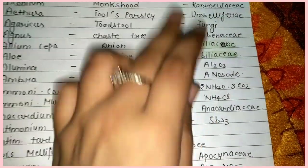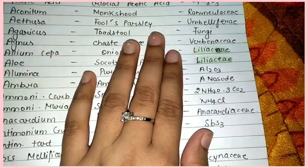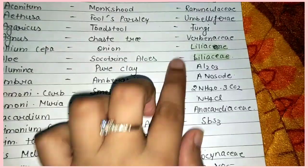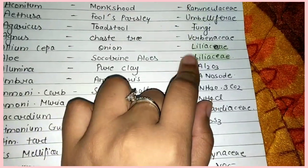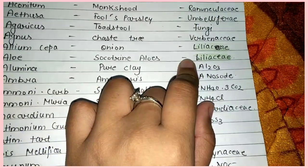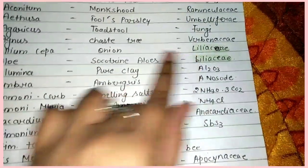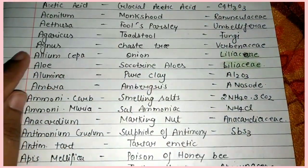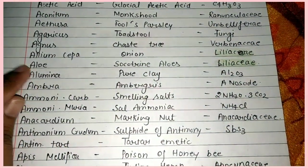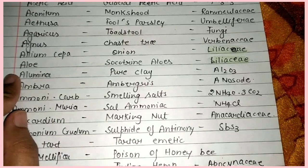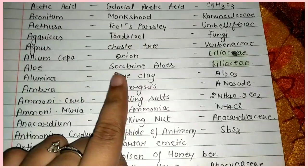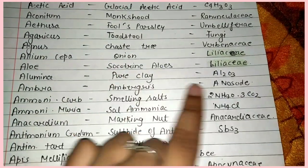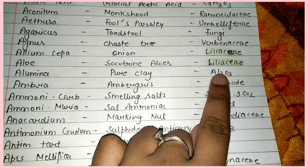So guys, among the families we have covered so far, two are the same — Liliaceae: Allium cepa and Aloe. Next, Alumina — Pure Clay, formula Al2O3.